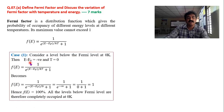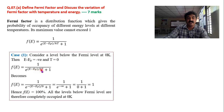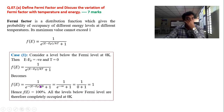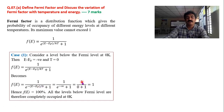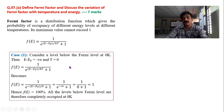Now let us take three different cases. In the first case, I consider an energy level below the Fermi level. Below the Fermi level means E minus EF is less than 0, that is negative. Taking temperature as 0, the exponent becomes e^(−∞) = 0. Therefore, F(E) = 1/(0+1) = 1, meaning 100% — any level below the Fermi level is 100% occupied.